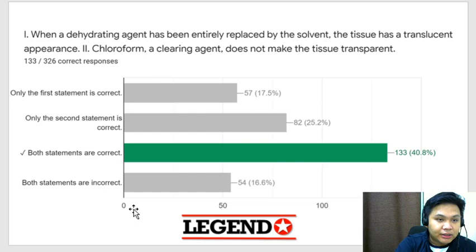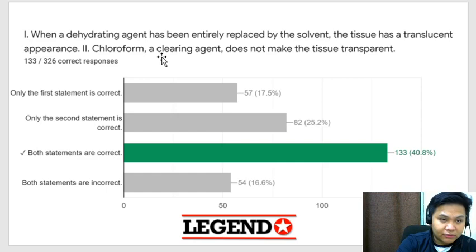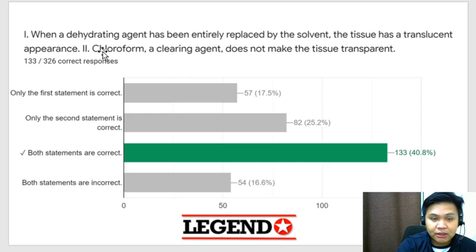You have here two statements. Statement 1: when a dehydrating agent has been entirely replaced by the solvent, the tissue has a translucent appearance. Statement 2: chloroform, a clearing agent, does not make the tissue transparent. Both statements are correct. The first statement describes the process of de-alcoholization or what we call clearing — after clearing, your tissue usually assumes a translucent appearance. The second confirms that chloroform does not make the tissue transparent.